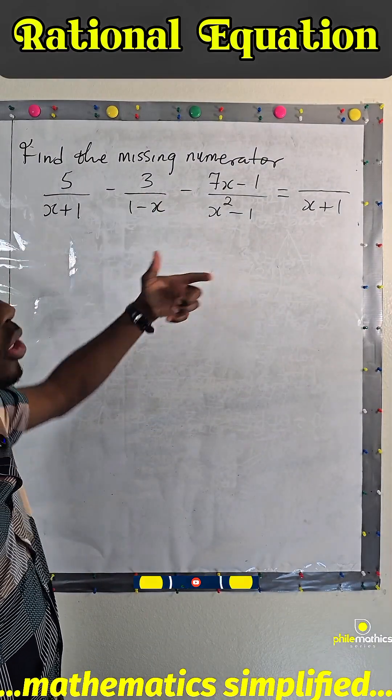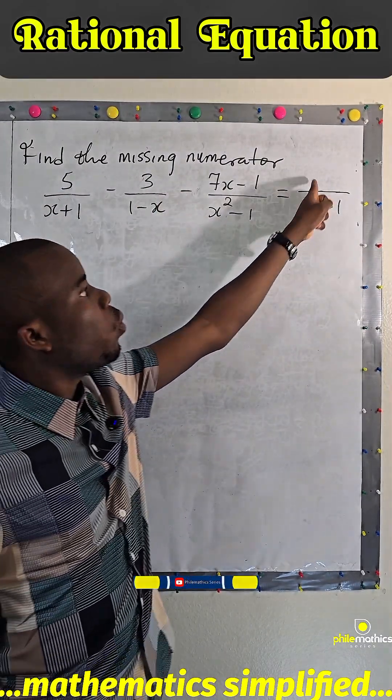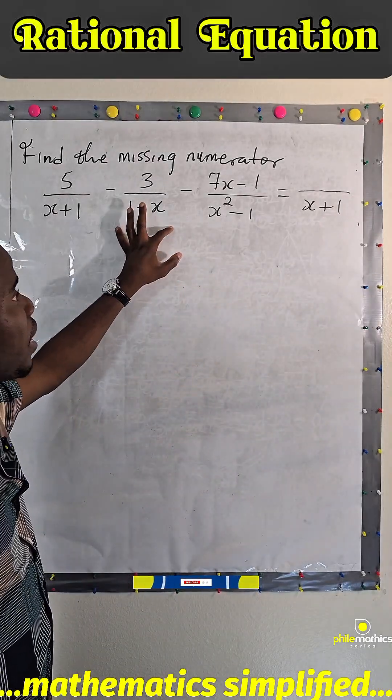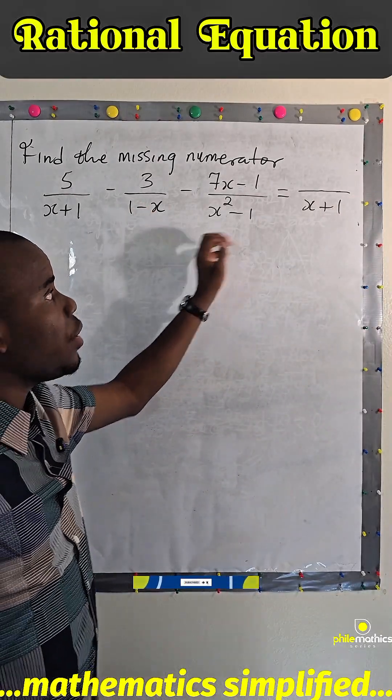We are given this rational algebra and we are asked to find what is this missing term here. What we simply do is to simplify the left hand side and find out at the end of the day what this happened to be.